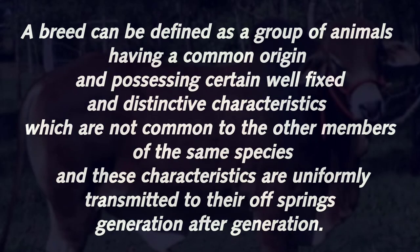Definition of breed: A breed can be defined as a group of animals having a common origin and possessing certain well-fixed and distinctive characteristics which are not common to other members of the same species, and these characteristics are uniformly transmitted to their offspring generation after generation.